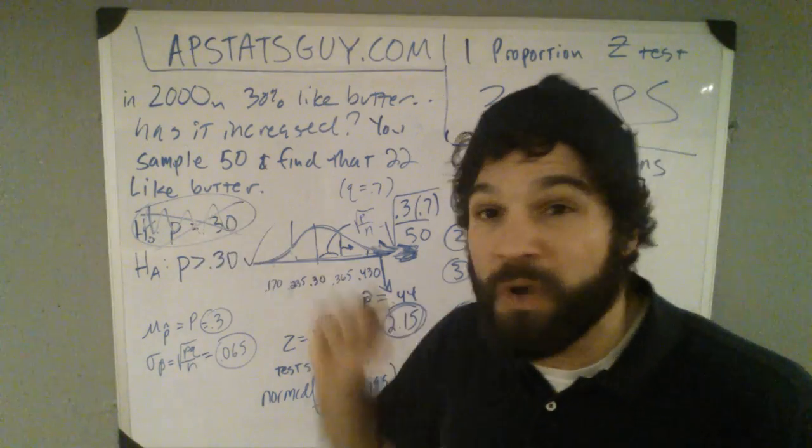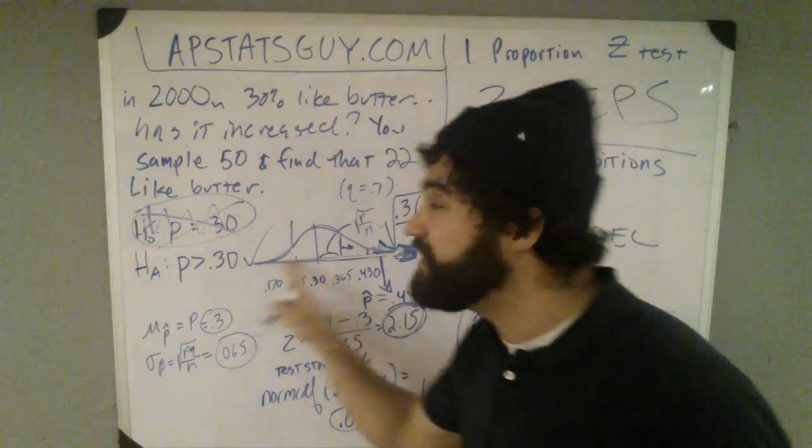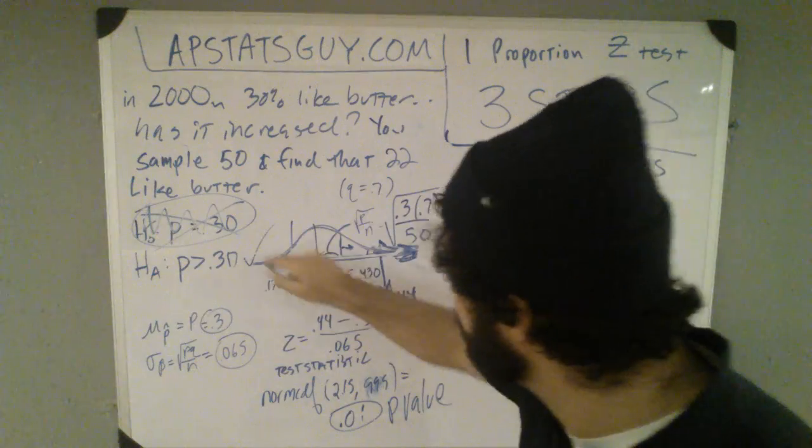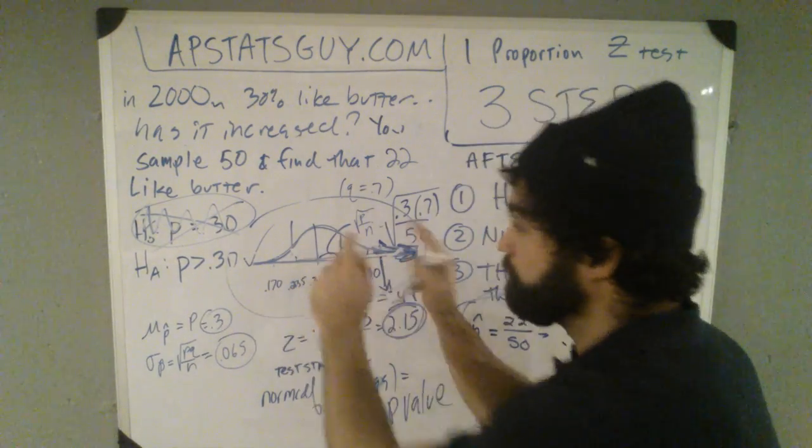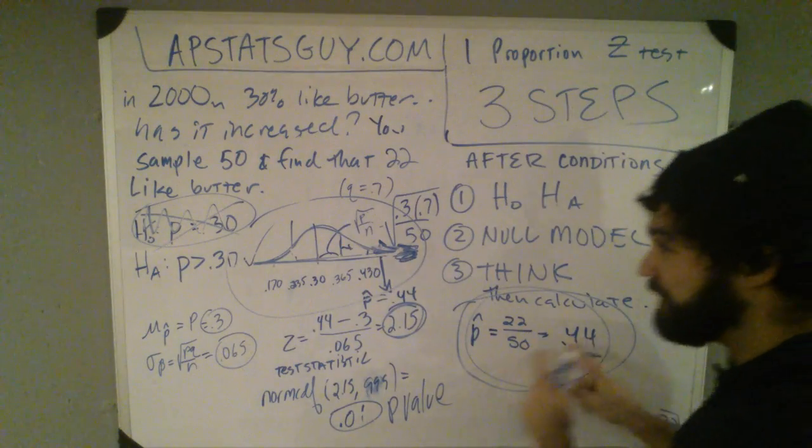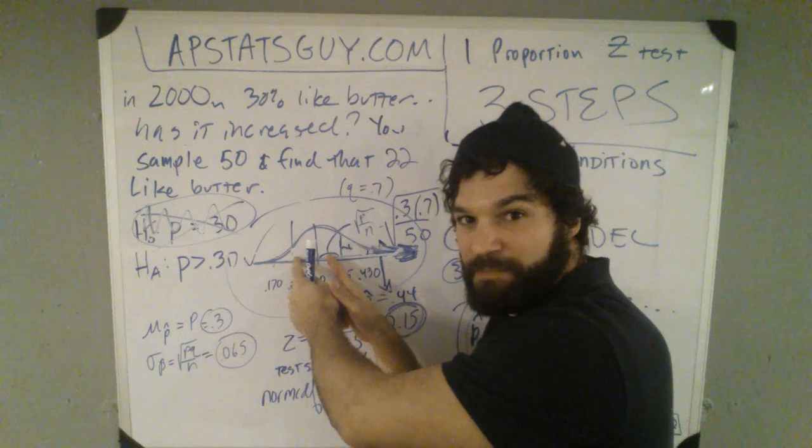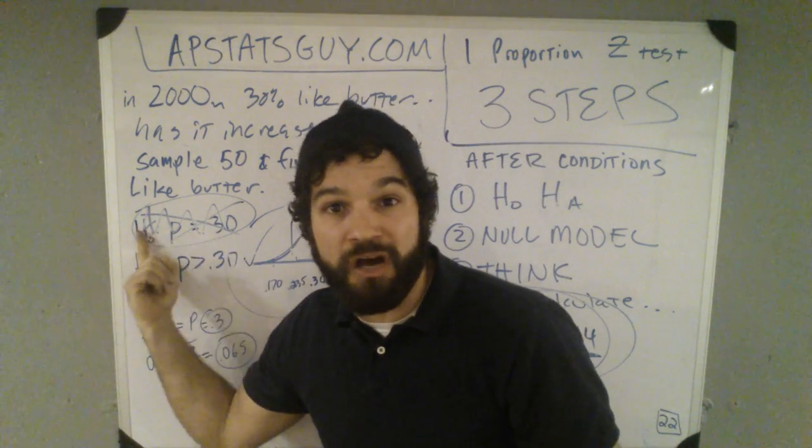It's the likelihood of getting this p-hat from your sample from this pile of p-hats, this null model. So basically, the p-value is the likelihood of getting your p-hat from that pile of p-hats. And that pile of p-hats comes directly from your null hypothesis.